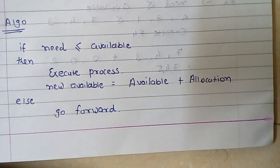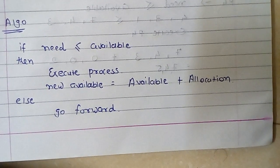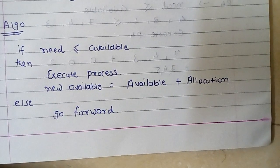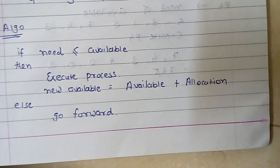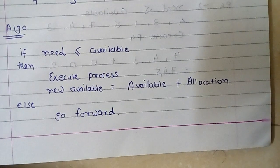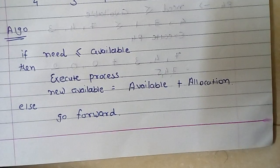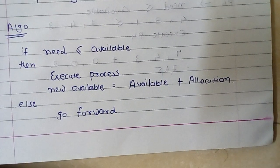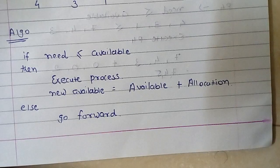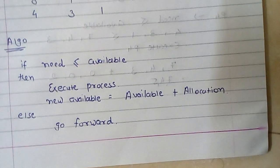This algorithm is named so because it is used in banking systems to determine whether a loan can be granted or not. Consider there are N account holders in a bank with some total money. Every time a loan has to be granted, the bank subtracts the loan amount from its total money, then checks if the difference is greater than the sum of all accounts. This ensures the bank has enough money even if all account holders withdraw at once.